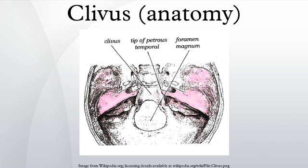Clinical importance: the clivus is also the site for chordoma. Clivus is also used as an abbreviated term for the clivus ocularis, which is the sloping inner wall of the retina as it dips into the fovea and the macula of the eye.